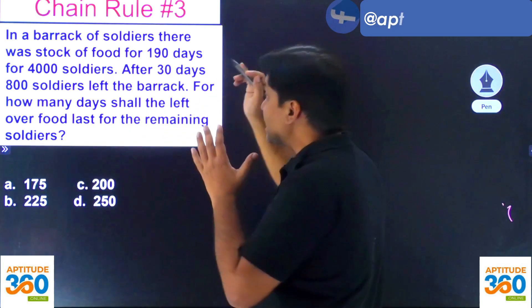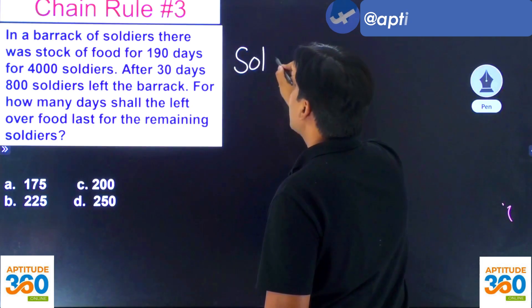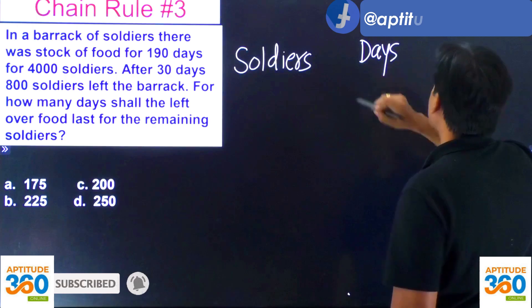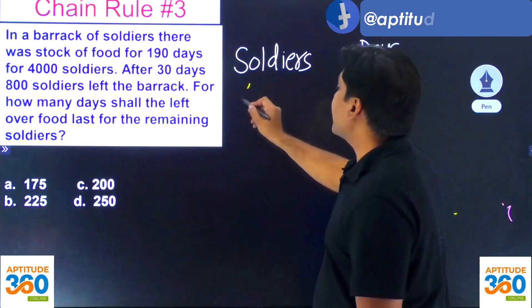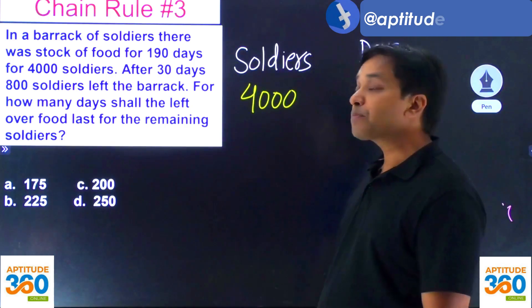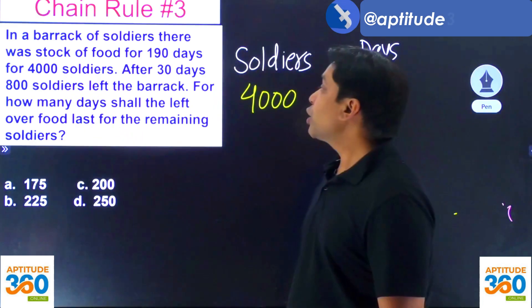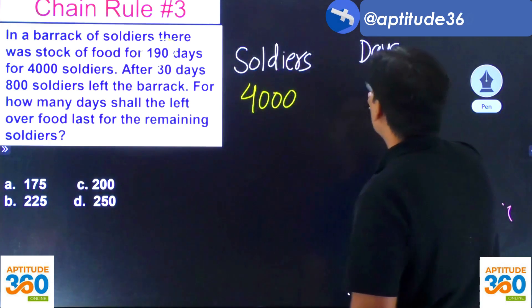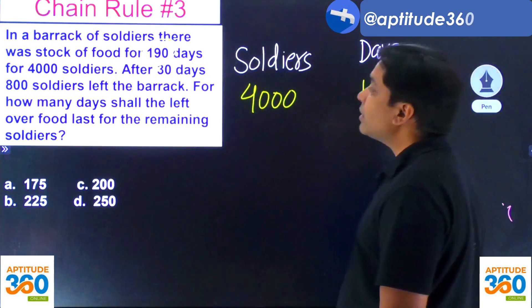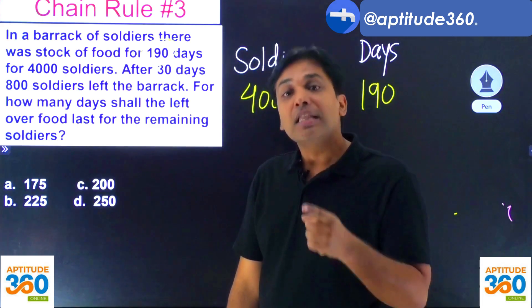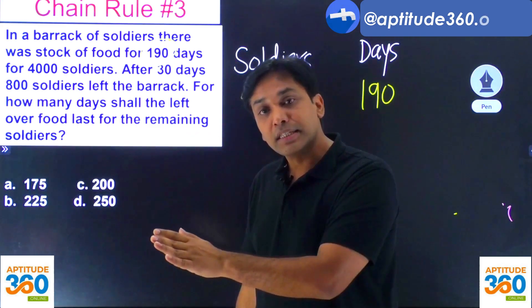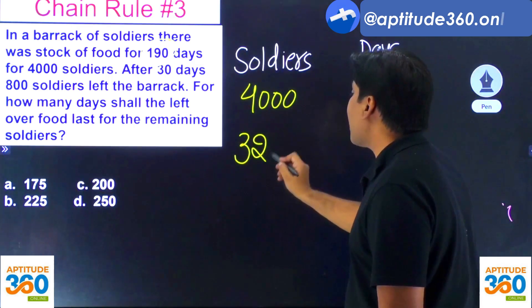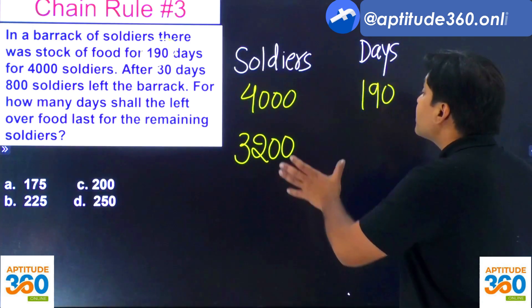There are only two variables in this problem. Variable number 1 is number of soldiers, and variable number 2 is the number of days. So at the very beginning, there are 4000 soldiers, and the food could be sufficient for 190 days. After 30 days, these 4000 soldiers are consuming food, and then 800 soldiers are gone. So now how many soldiers are in the barrack? We have 3200 soldiers.